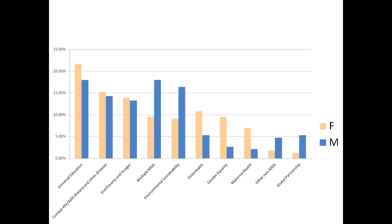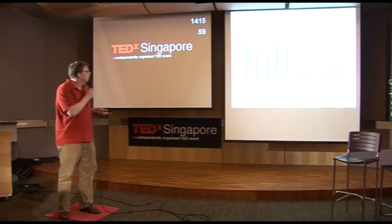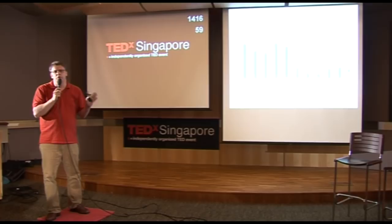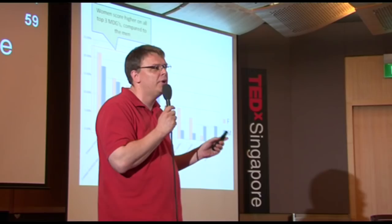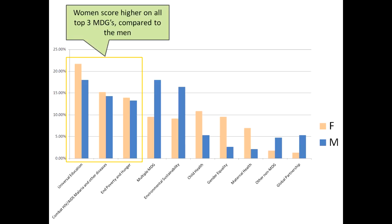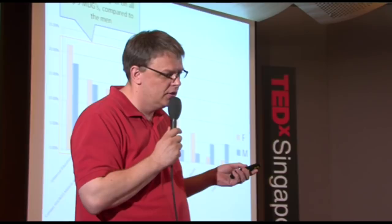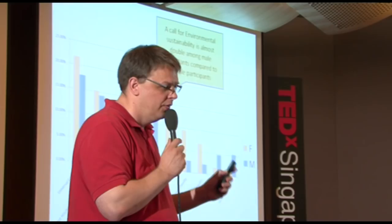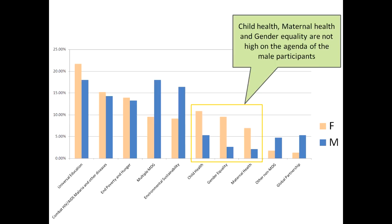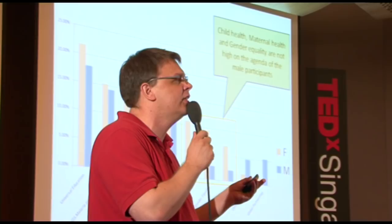What I'd like to do is give a quick overview of the statistics. There are a couple of surprising things here. This is based on about 400 pictures taken over the last four weeks — I stopped collecting a couple of days ago because I ran out of time. If you look at the top three MDGs — universal education, poverty and hunger, and combat HIV-AIDS — the female population scores generally higher than the guys, especially for universal education. Also, the call for environmental sustainability is almost double among guys versus girls. Child health, maternal health, and gender equality are not really high on the guys' list.